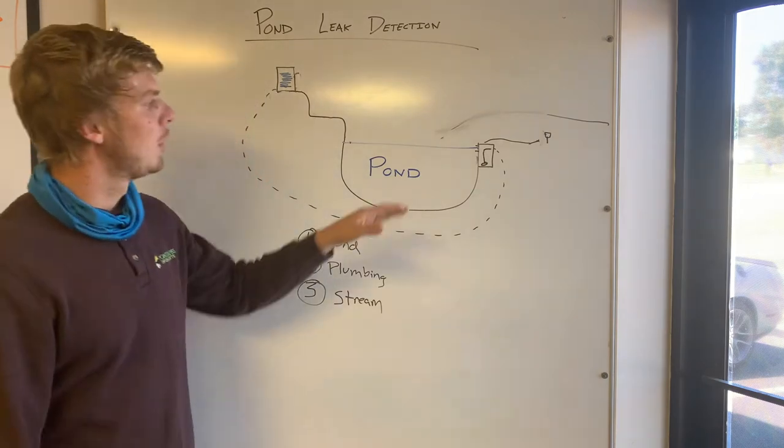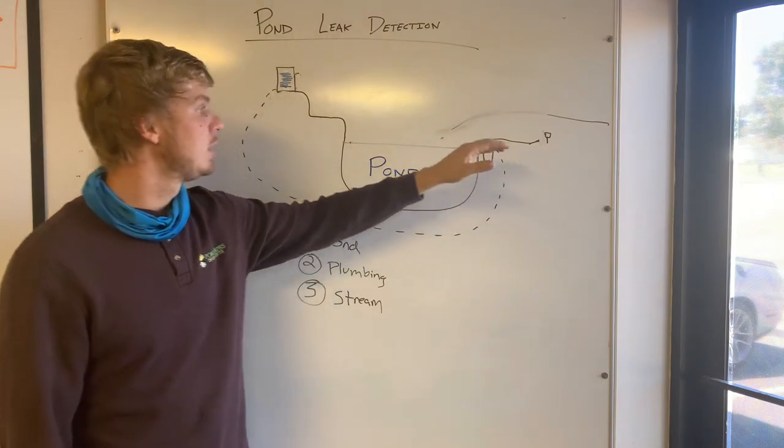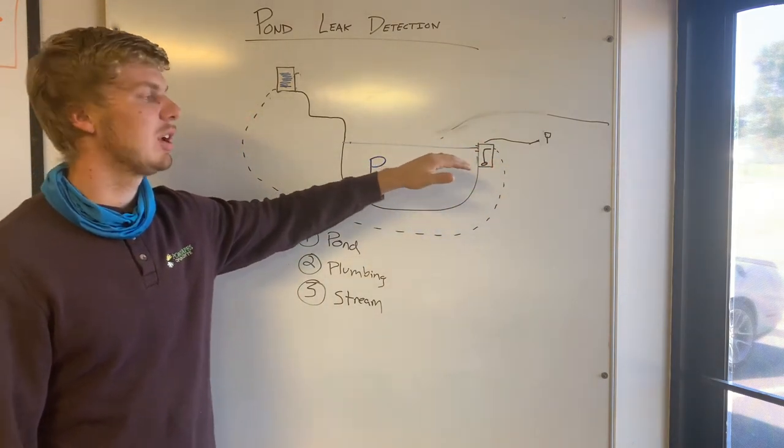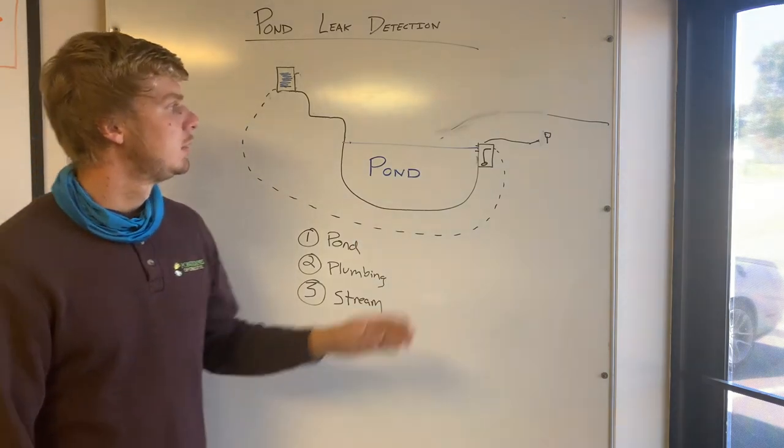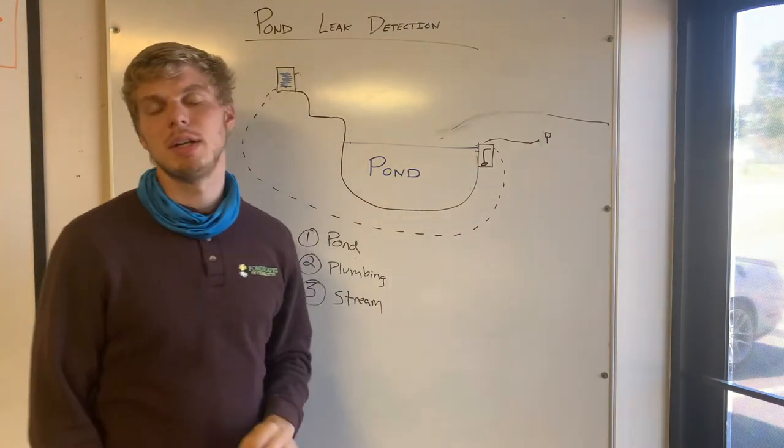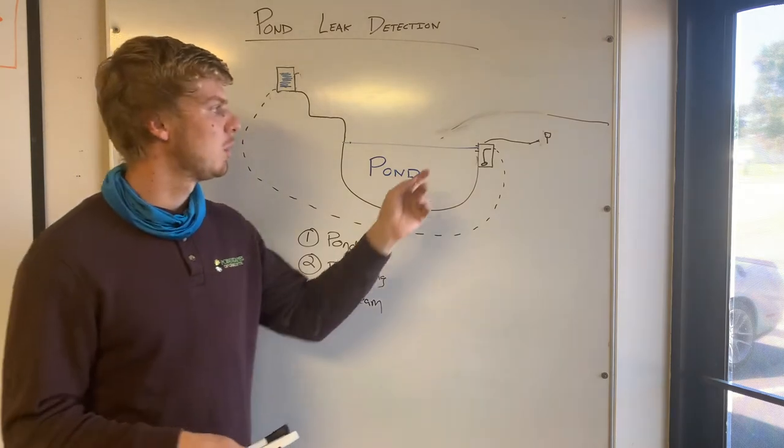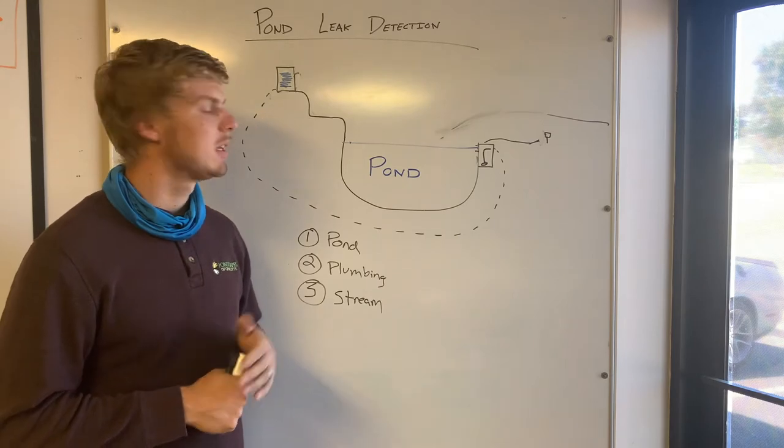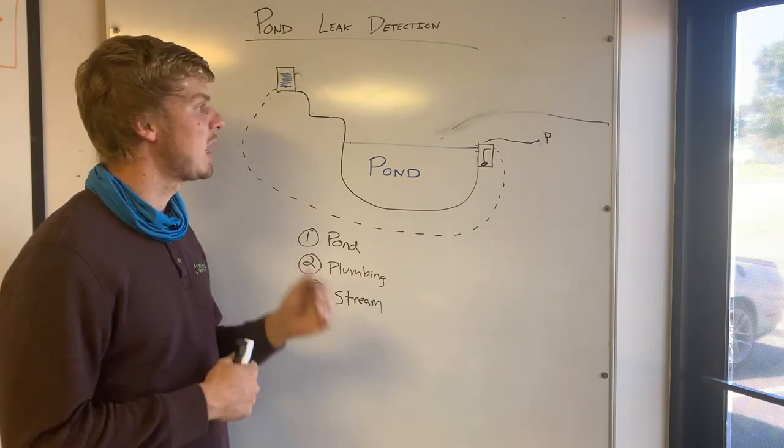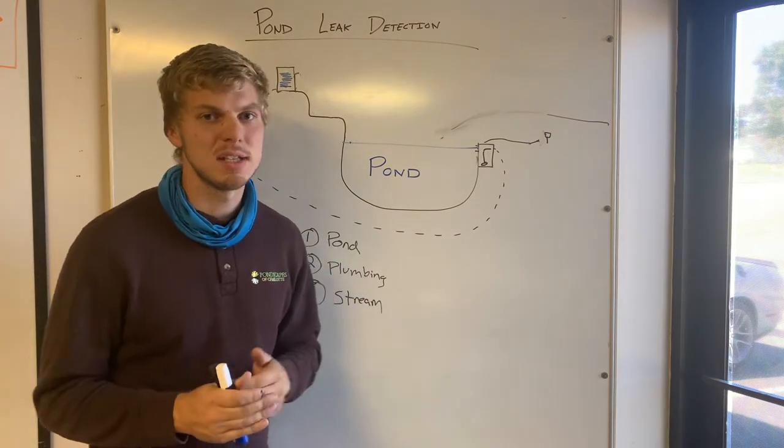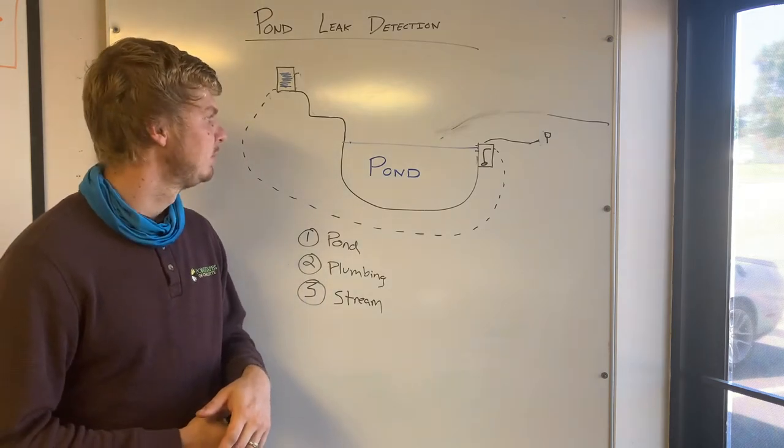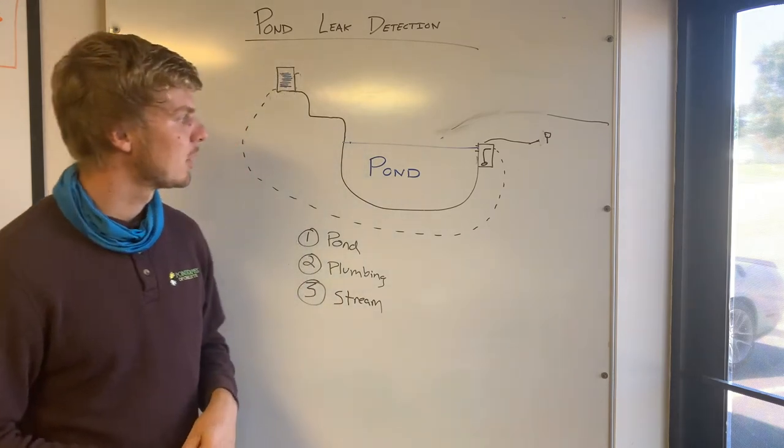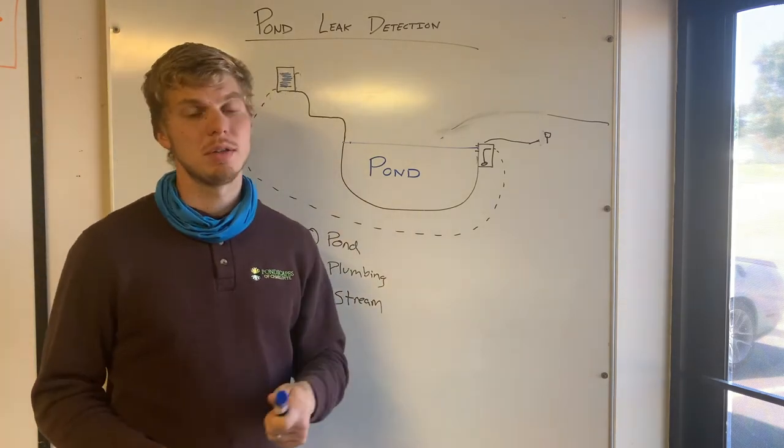Okay so once you have the pump unplugged, the pond filled up to the normal operating height, you want to take a photo of preferably the skimmer, but if it's too hard to take a photo of where the water level is on the skimmer you can take it in a different spot. But whatever the spot is, it's got to be consistent and noticeable if the water level is dropping overnight. So take a picture, if you send it to us that's even better.